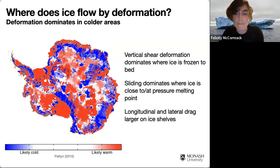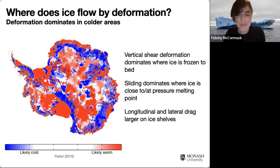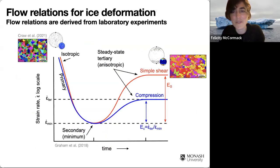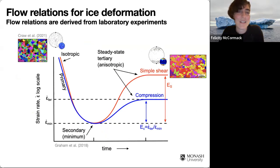Deformation is also really important on the ice shelves, and particularly where we see those membrane stresses operating — stretching as we move towards the ice ocean front. So deformation is important in large parts of Antarctica, but how do we model it? The answer, of course, depends on your model and your question, and I'm really focusing on the larger scale aspect of ice sheet modelling here.